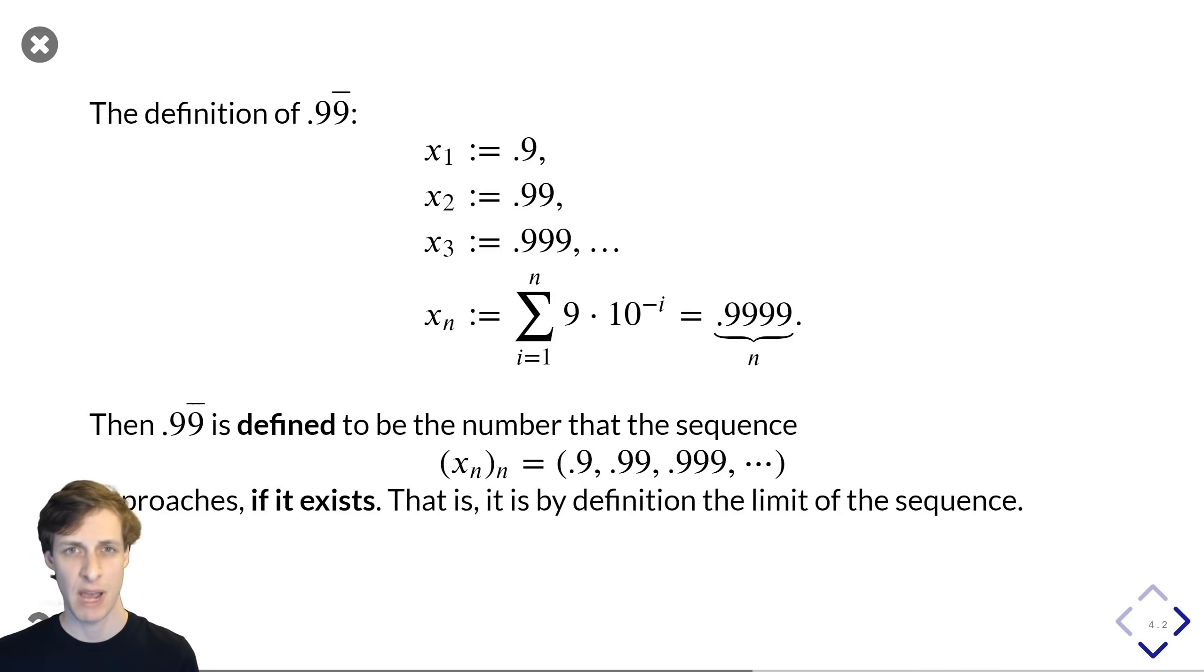But notice that this whole process of defining a repeating decimal didn't really depend on using 0.99. The real choice here that mathematicians made was not that 0.99 repeating equals 1. The actual thing that mathematicians decided on was, what does it mean to add up an infinite number of things?